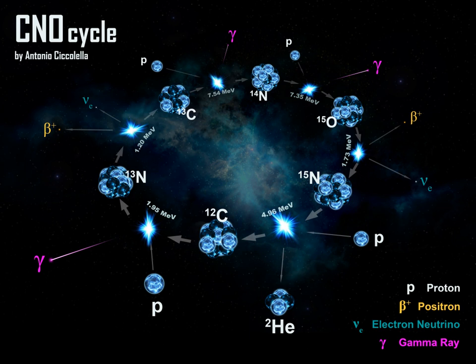4 1 1 H plus 2 e minus yields 4 2 He plus 2 e plus plus 2 e minus plus 2 neutrino e plus 3 gamma plus 24.7 MeV. The positrons will almost instantly annihilate with electrons, releasing energy in the form of gamma rays.